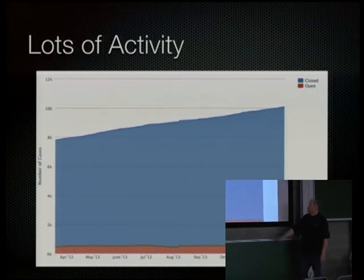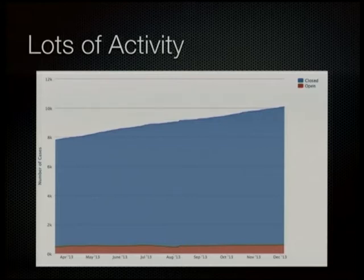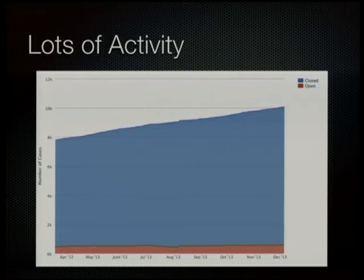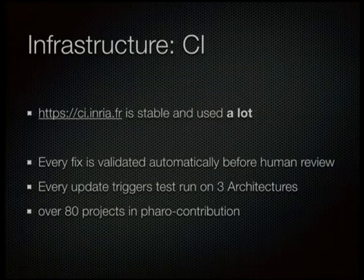Lots of activity means — this graph was made in December so it's a bit outdated — this is the release date of Faro 2, and this is shortly before Christmas. You can see that the open issues stay more or less constant, around 500, between 450 and 550 issues. It's really difficult to get that down. We always have sprints where we try, but it stays constant. Even so, people open a lot of issue tracker entries and they get closed too.